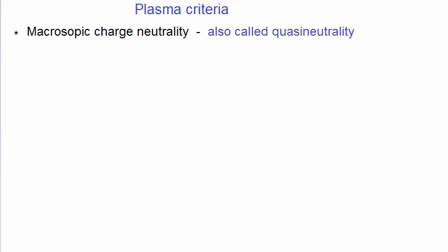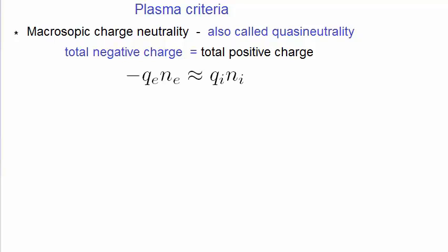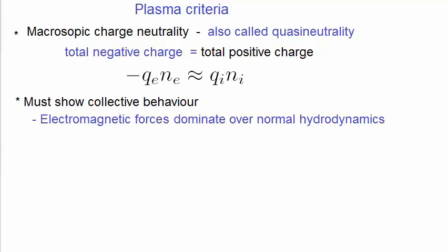When we started this lecture, we gave a very simplistic answer to what a plasma is. But there are actually quantifiable criteria that determine if an ionized gas is a plasma or not. Plasmas must be macroscopically charge-neutral, also called quasi-neutrality. There are, however, plasmas that are called non-neutral plasmas, but we'll stick with the definition followed by Chen, that is, of quasi-neutrality. That means the total negative charge is equal to the total positive charge in the plasma. This can be obtained by the following expression, where the left-hand expression is the total negative charge and the right-hand expression is the total positive charge. Plasmas must also show collective behavior. What does that mean? It just means that the electromagnetic forces in the plasma dominate over normal hydrodynamics you might get in a gas.